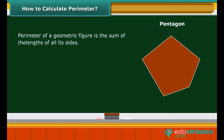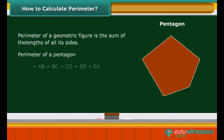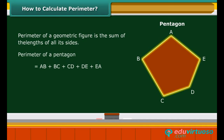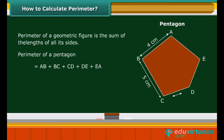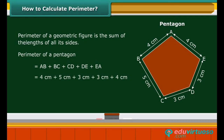A pentagon is a closed geometric figure of five sides. We have seen that the perimeter of a geometric figure is the sum of the lengths of its sides. Suppose the lengths of the five sides AB, BC, CD, DE, and EA are: AB = 4 cm, BC = 5 cm, CD = 3 cm, DE = 3 cm, and EA = 4 cm. The perimeter of the pentagon is 4 + 5 + 3 + 3 + 4 cm, which equals 19 cm.